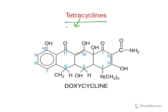Now let us see about tetracyclines. 'Tetra' means four, and these drugs have four rings — hence they are known as tetracyclines. This four-ring structure is known as the naphtacene ring, and there is a carboxamide group present. The important drugs are tetracycline, chlortetracycline, doxycycline, minocycline, and metacycline.